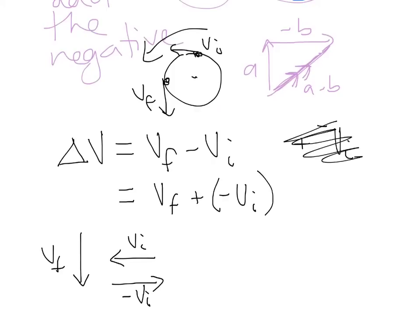Because we're doing the final plus the negative of the initial, we will go final plus negative initial, just top to tail. Always top to tail. And then the other rule, add the negative, change the direction on the arrow. So final minus the initial, there is a change in velocity.